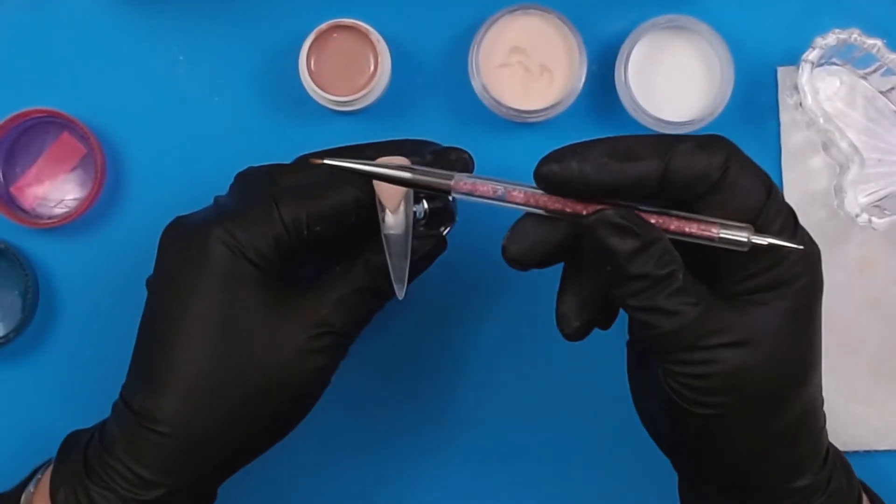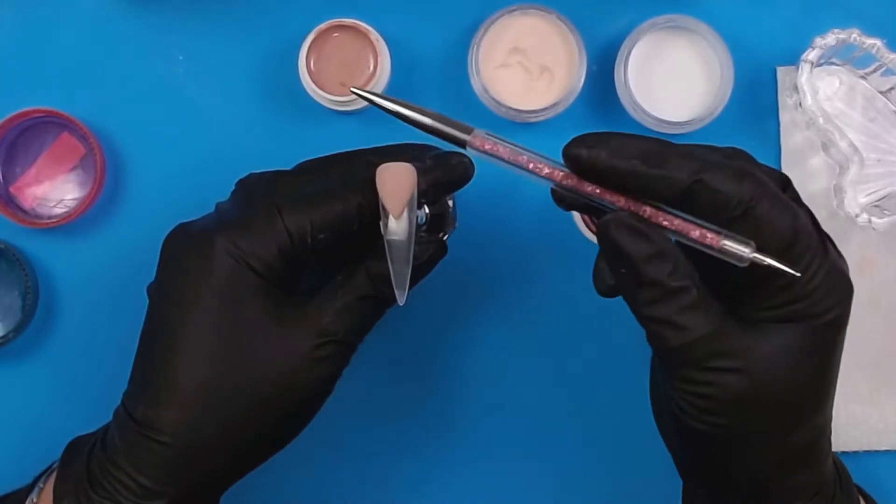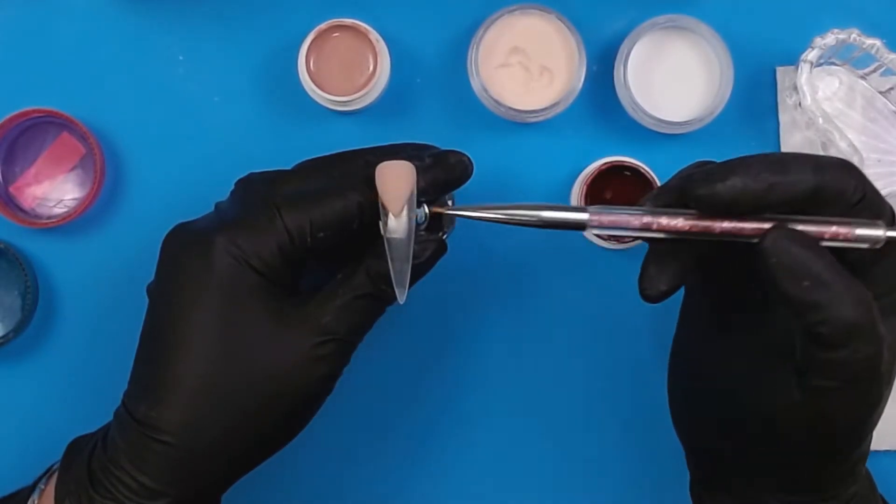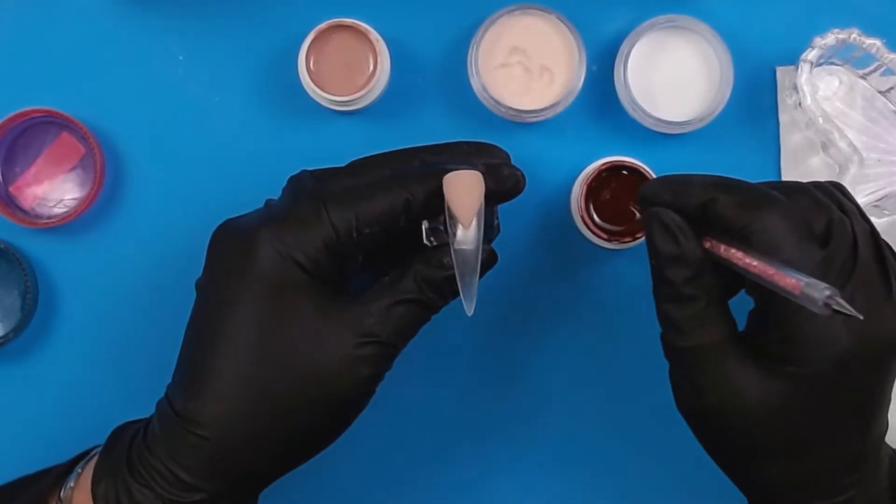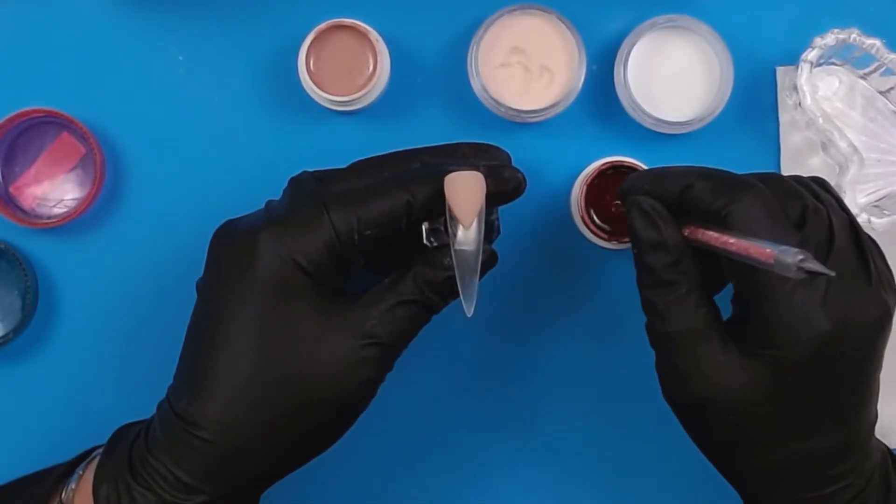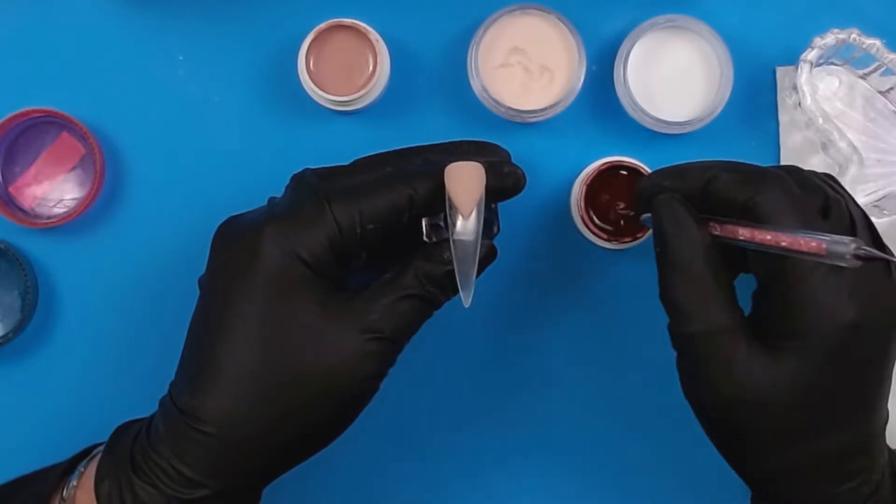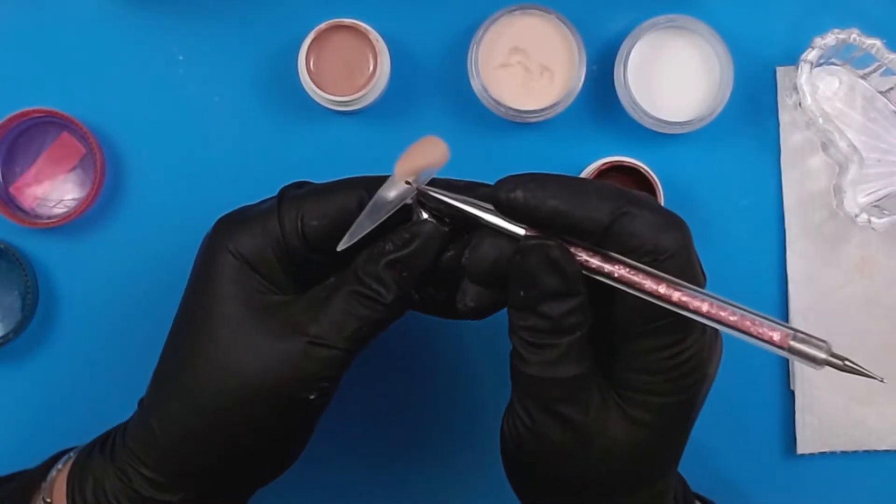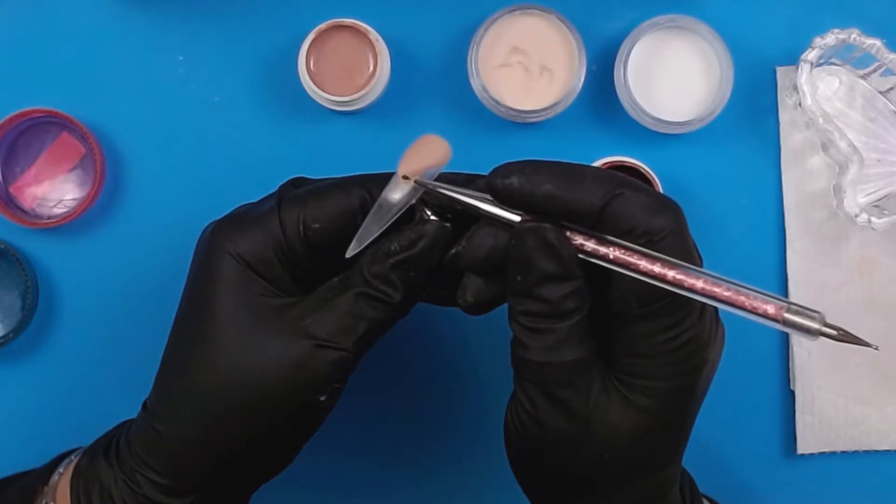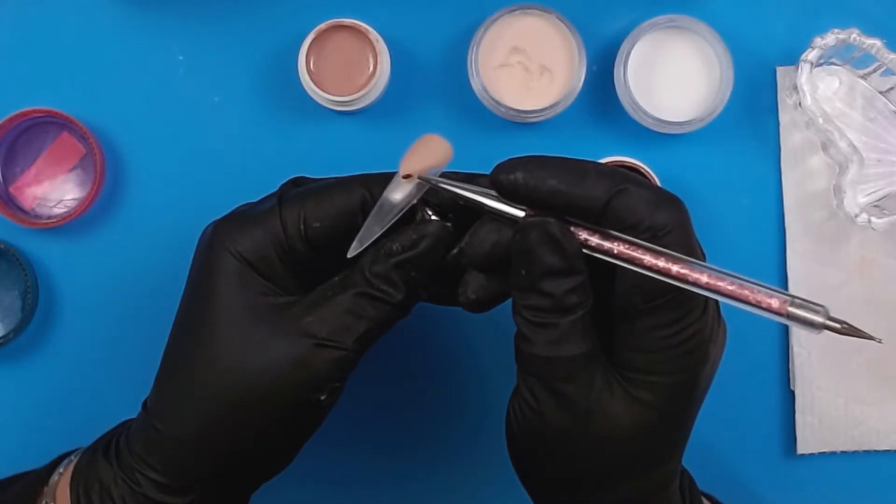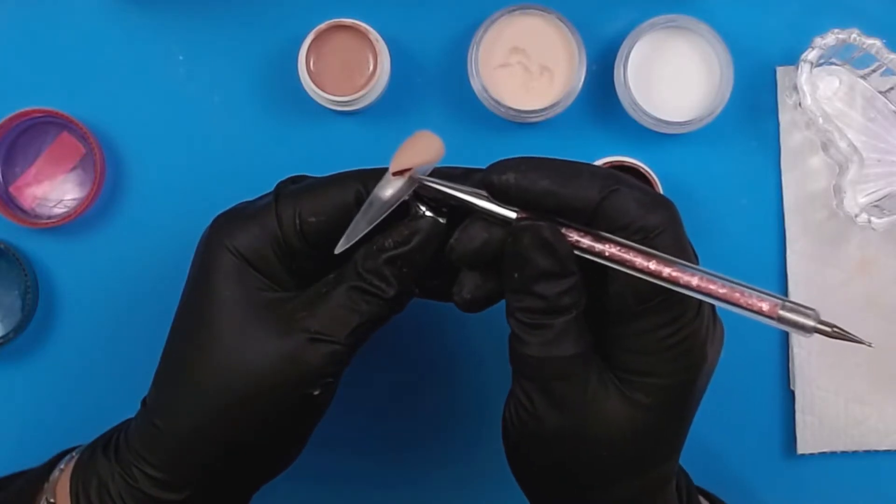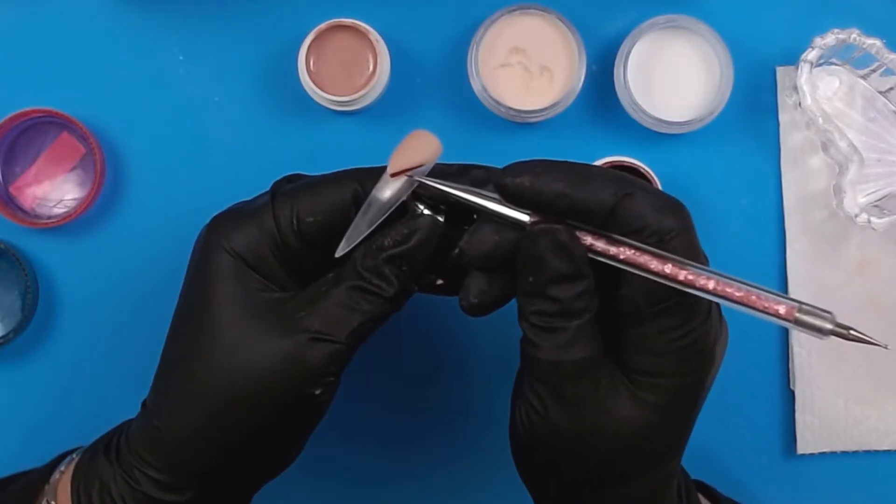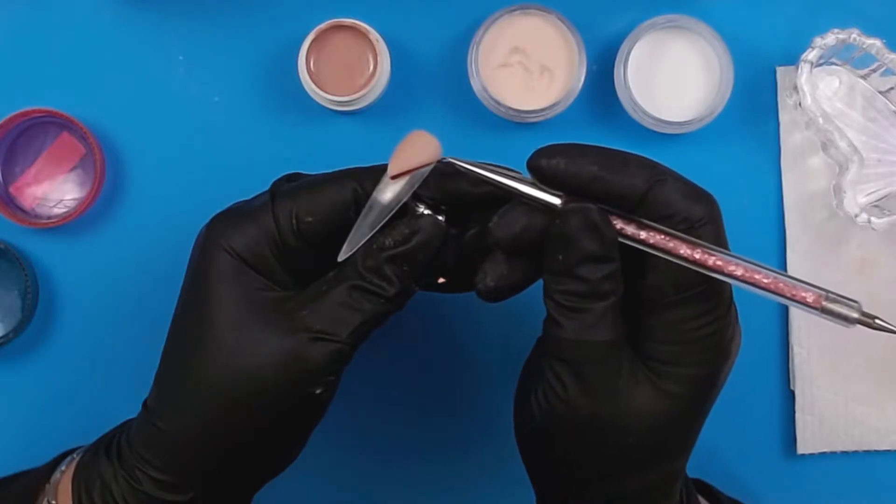I'm going to use this cute little gel paintbrush and actually I love this set and there's a link for this in the description box below. It's very handy because at the other end it's got a dotting tool and they're different sizes, different lengths of brushes.